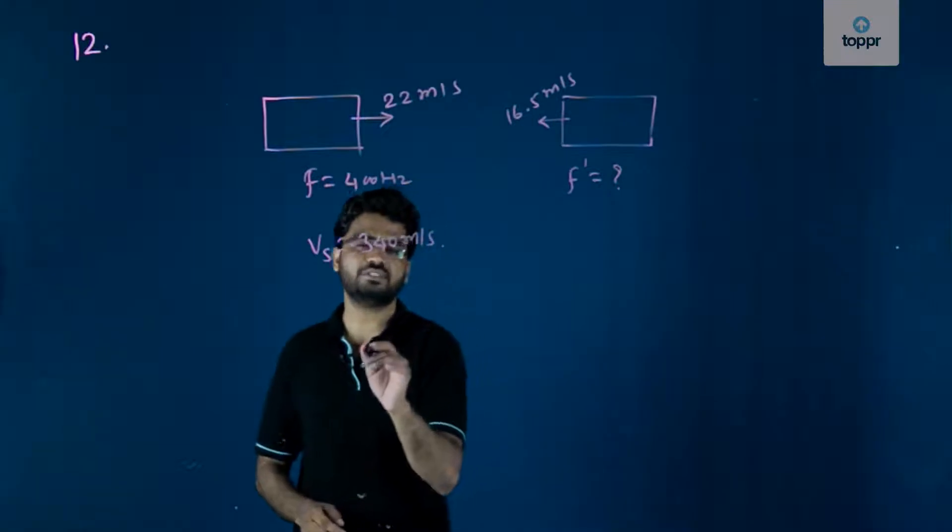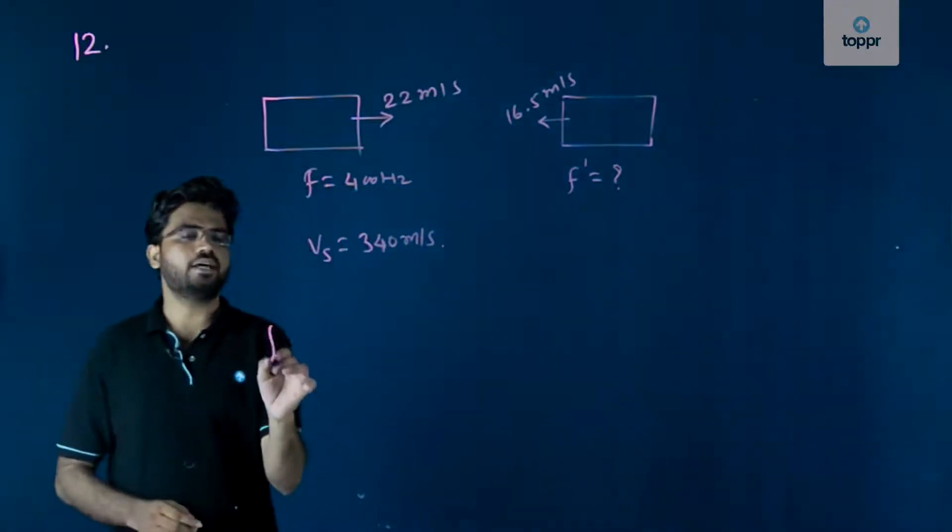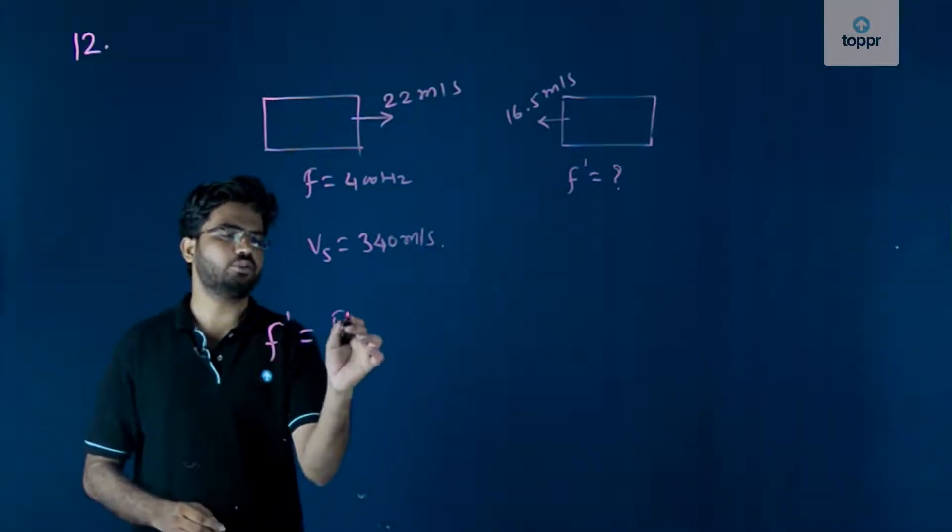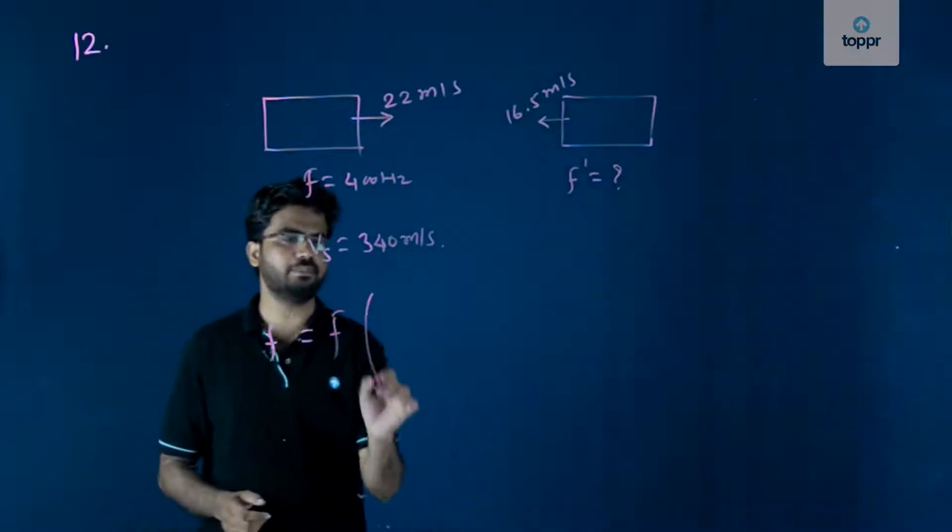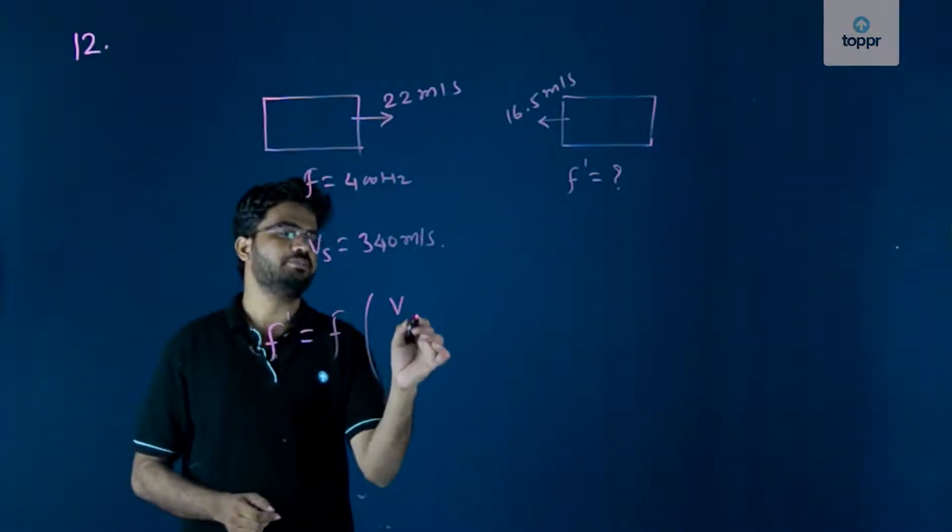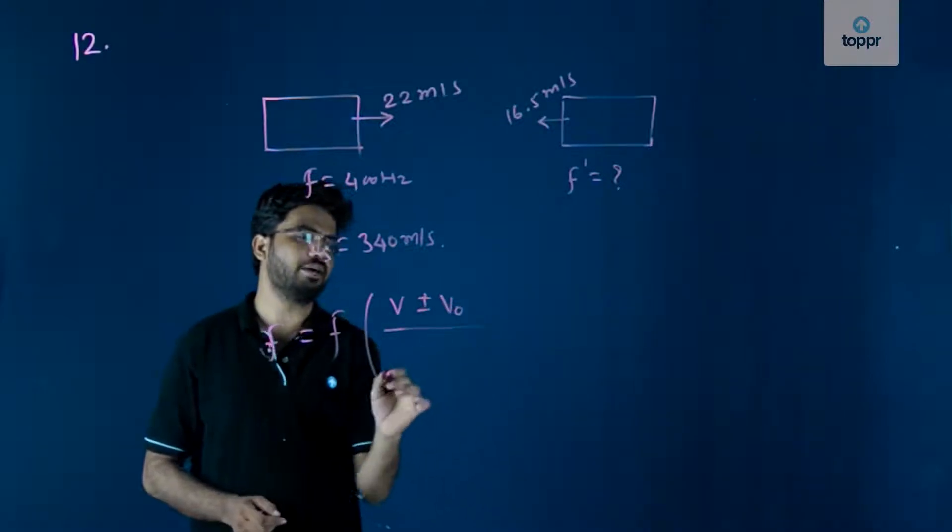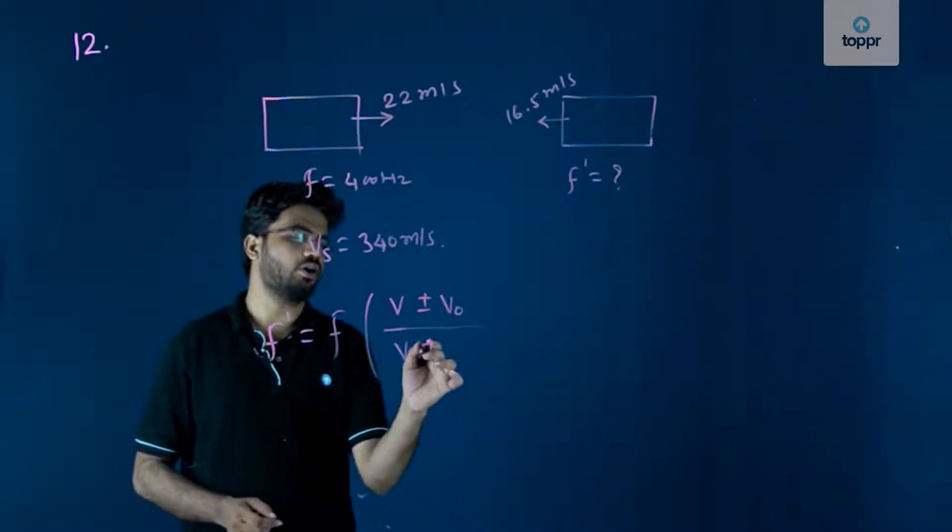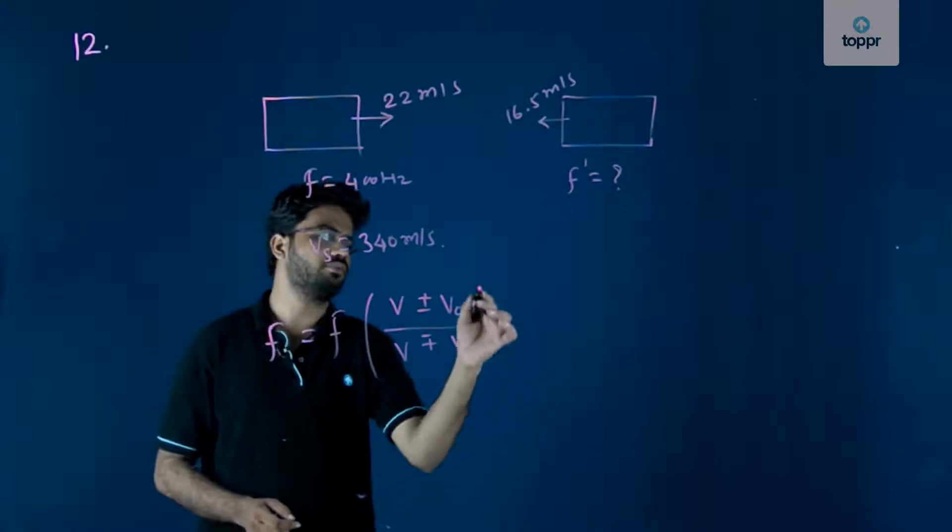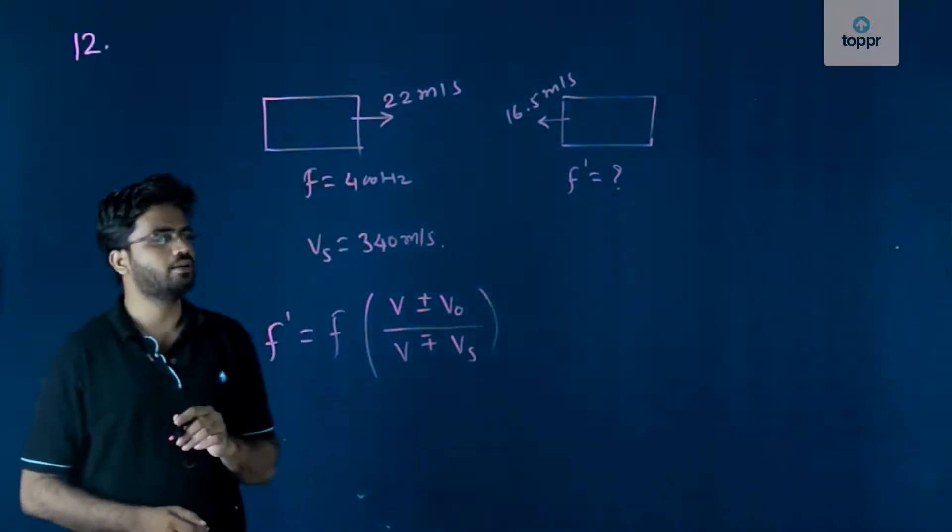So, we have the formula for apparent frequency as apparent frequency is equal to original frequency in bracket v plus or minus of v_o divided by v minus or plus of v_s, right.